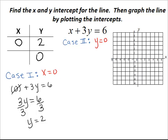Wherever we have a y we will write a 0. So we have x plus 3y and in this case y is 0, so 3 times 0 equals 6.